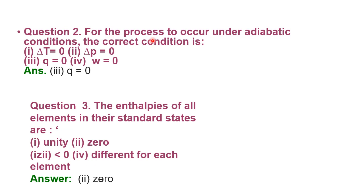Next question: for a process to occur under adiabatic conditions, the correct condition is ΔT = 0, ΔP = 0, q = 0, or w = 0. Recall our first session — adiabatic conditions refer to conditions under which overall heat transfer across the boundary between the thermodynamic system and the surroundings is absent. Therefore q is always equal to zero. The correct choice is number three.